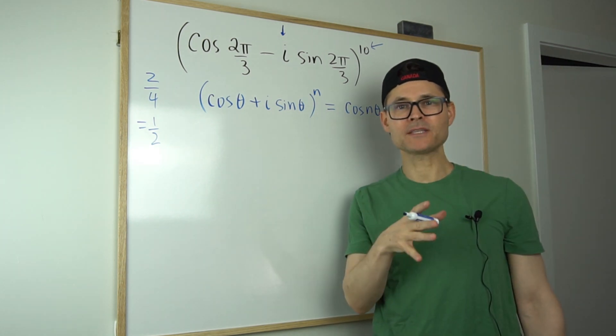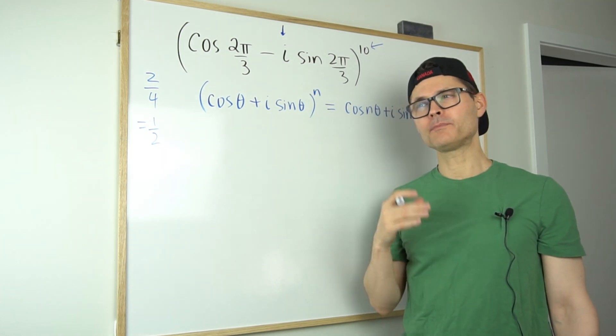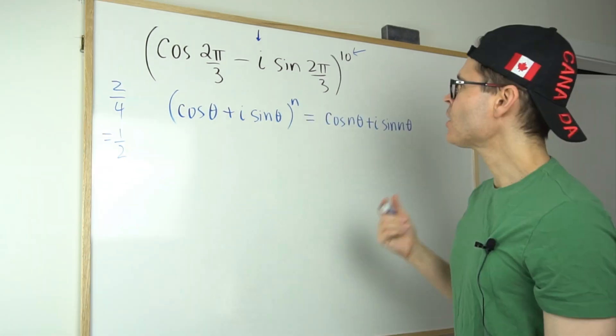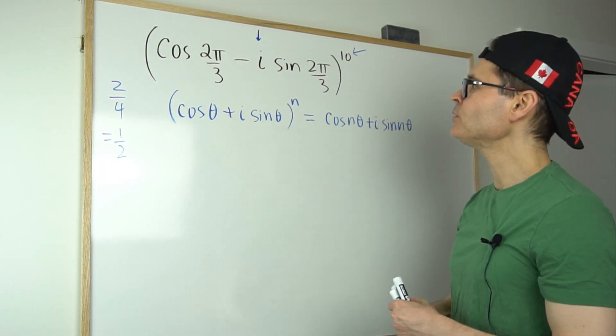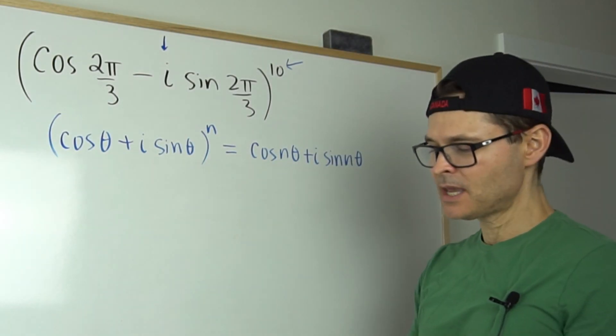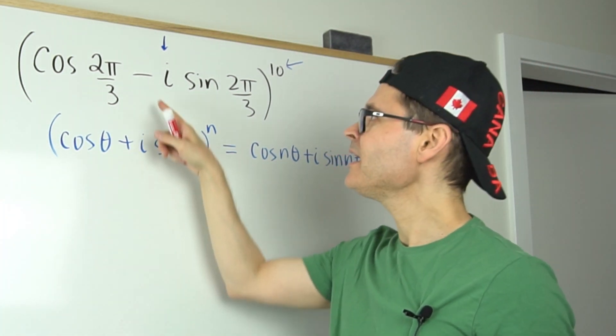And if you've watched any of my past videos, we use this theorem when we solve polynomials with complex roots. Okay, so I'm going to take a look at the structure that I have here. It looks kind of like this. The problem is De Moivre, this is a plus. Okay, and this is a minus.